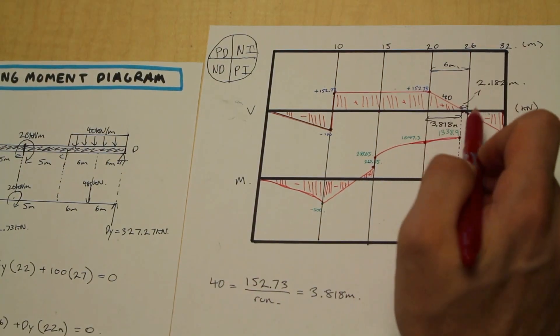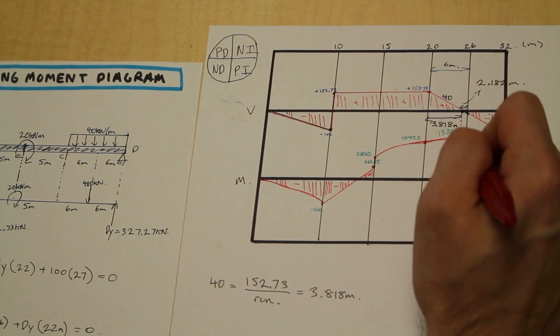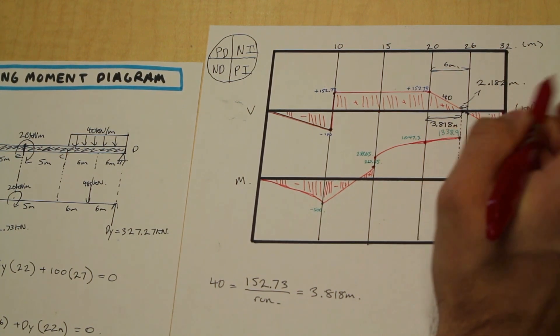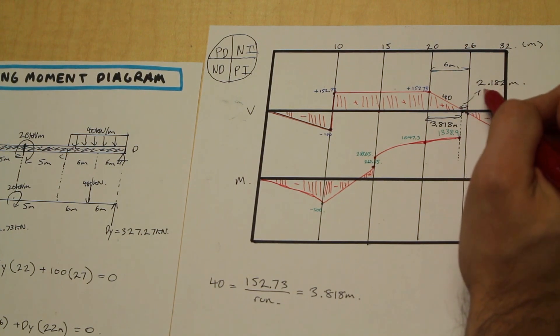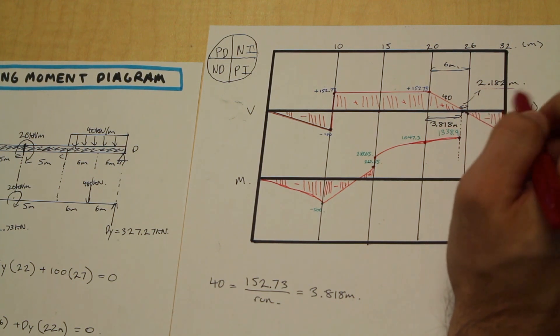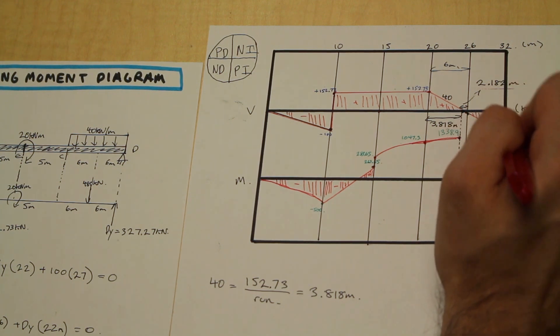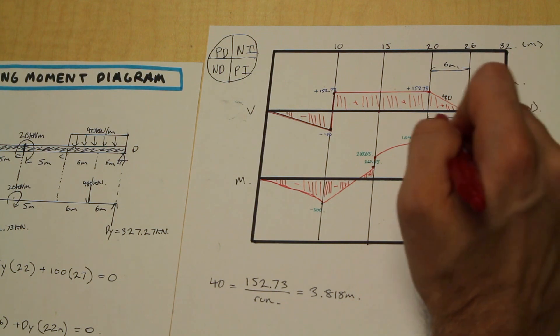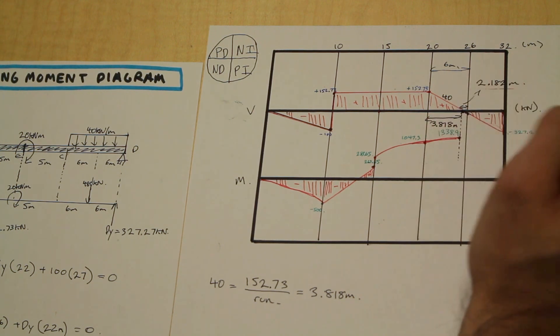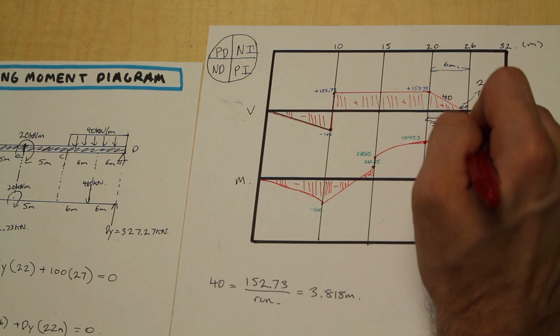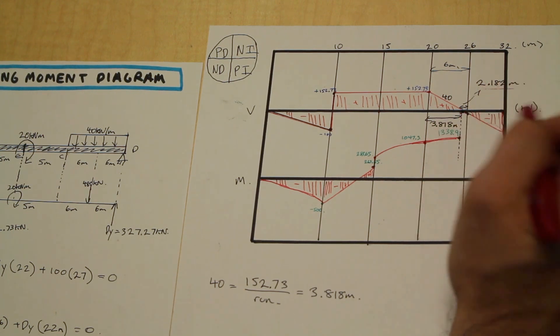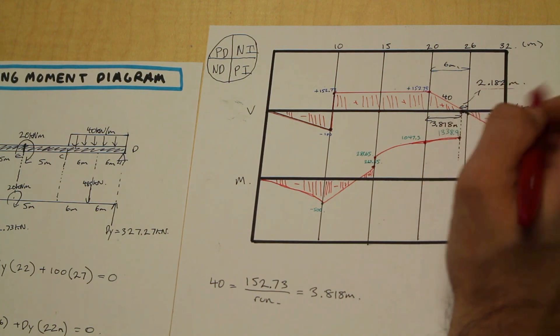Now, we're here, we're at the maximum point, 1338.9 kilonewton meters. And we now need to find the triangle. I did add this distance. And sometimes you might need it to calculate a little triangle here. But in this particular case, we have a large triangle here. And we know this distance, and we know this distance. So we can find the base of this triangle up to the point of zero shear.